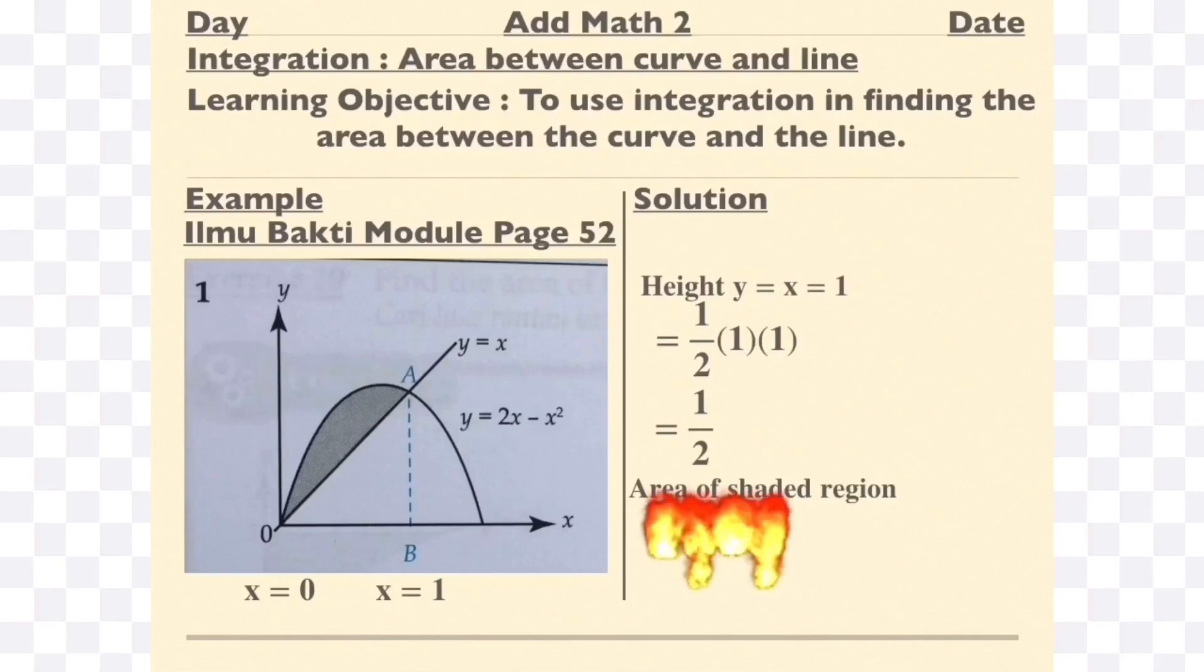Now to find the shaded region, the area that you just found, which is 2 over 3, just minus the area of the triangle. The final answer will be 1 over 6.